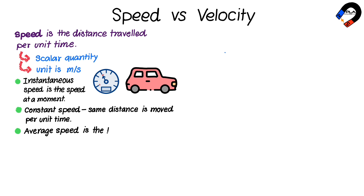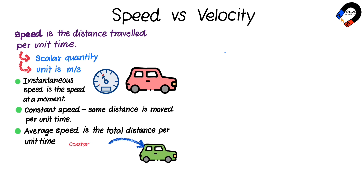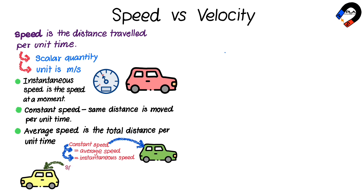Constant speed means that the same distance is moved per unit time. Average speed is the total distance moved per unit time. If a car is moving with constant speed, then average speed and instantaneous speed are equal to the constant speed. If speed varies with time, its instantaneous speed also varies, and average speed is not equal to instantaneous speed.